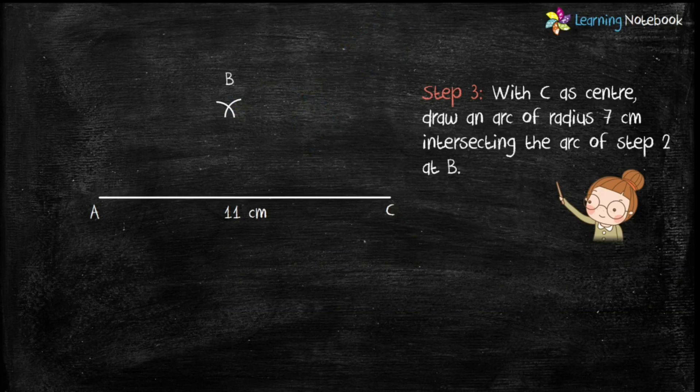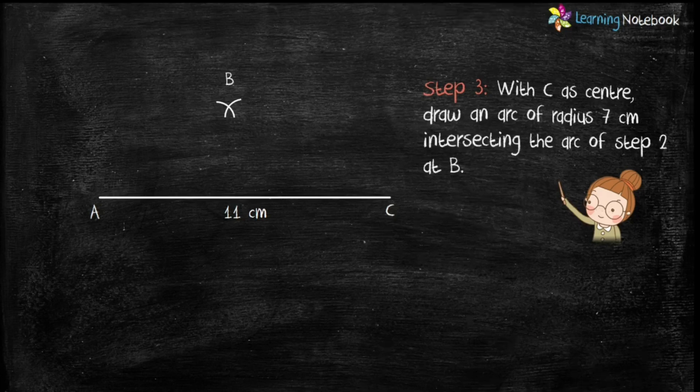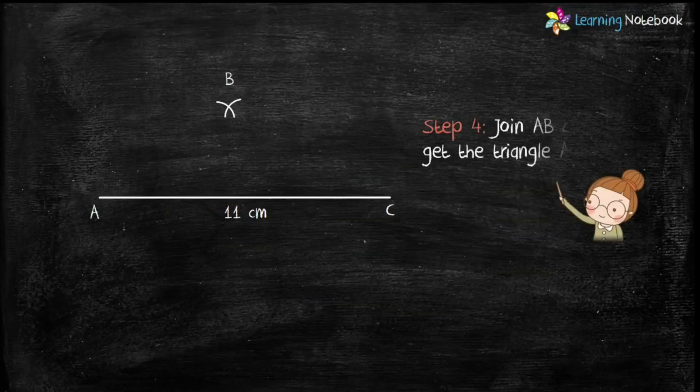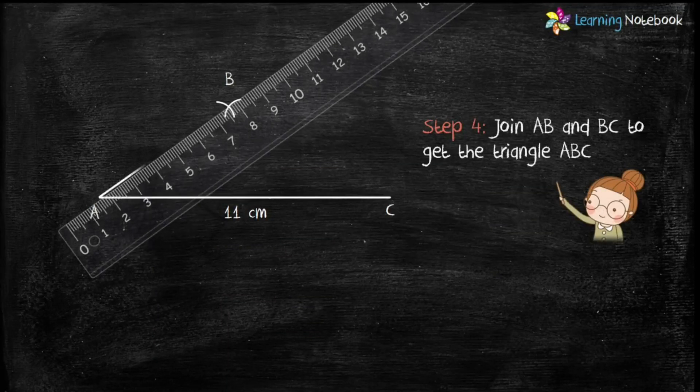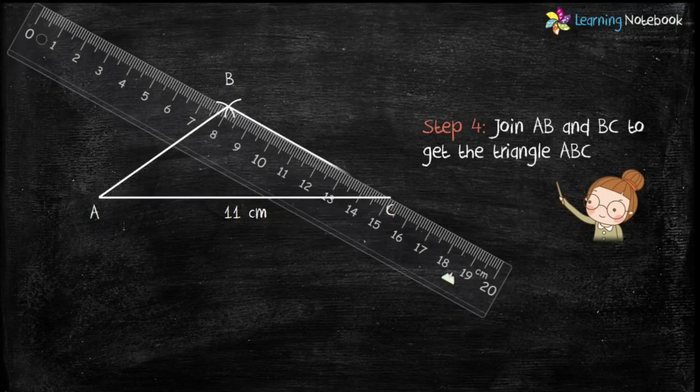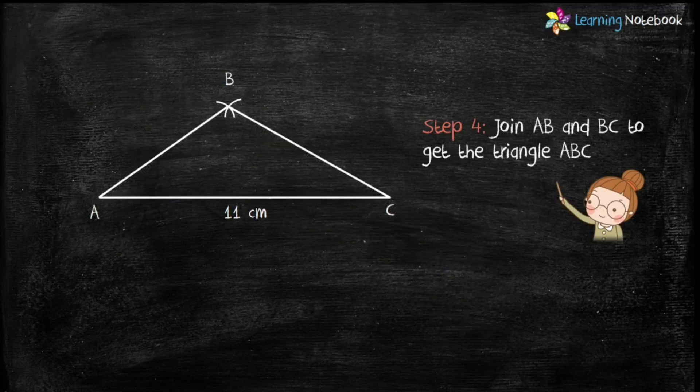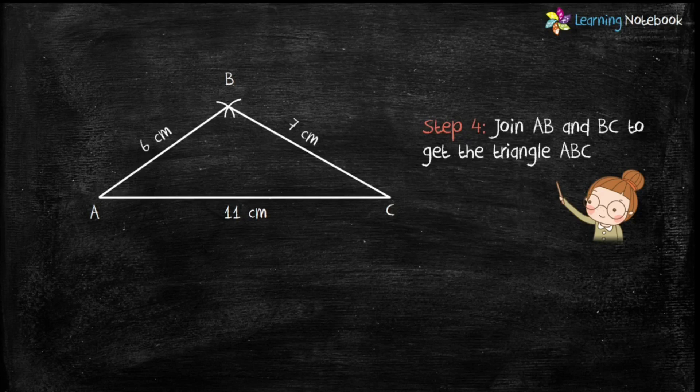This arc will intersect the arc of step 2 at point B. In step 4, join AB and BC to get the triangle ABC, then mark the given measurements.